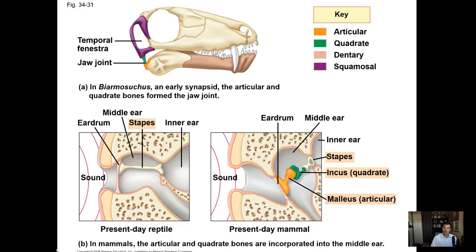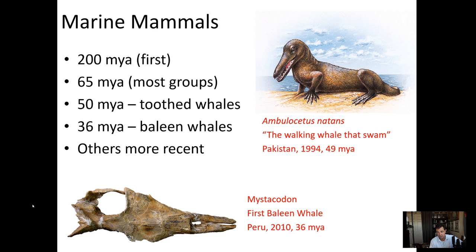This is a close-up view showing the difference between a reptilian jaw and inner ear compared to what we have in mammals. You can see that present-day reptiles have a single bone in the middle ear, while mammals have three bones making up the middle ear.